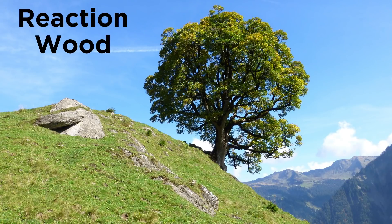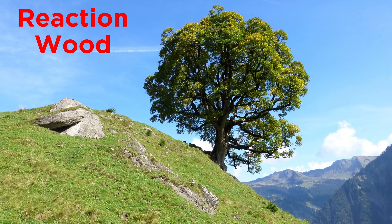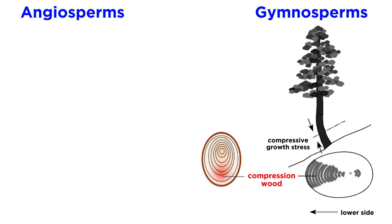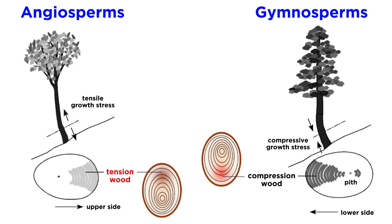Before we study ring anomalies, we need to cover reaction wood. If you've ever seen a tree growing on a slope or otherwise inhospitable area, you've noticed that no matter what the tilt in the base, the top of the tree often reaches straight up towards the sun. This is due to reaction wood, which trees produce to maintain a vertical orientation. Angiosperms and gymnosperms produce reaction wood in two different ways. Gymnosperms produce compression wood on the downhill side of the tree, resulting in wider-than-average rings on the downhill side and narrower-than-average rings on the uphill side, which pushes the pith up vertically. Angiosperms produce tension wood on the uphill side, causing wider-than-average rings on the uphill side and narrower-than-average rings on the downhill side; the reinforced, thickened wood pulls the pith of the tree up vertically.